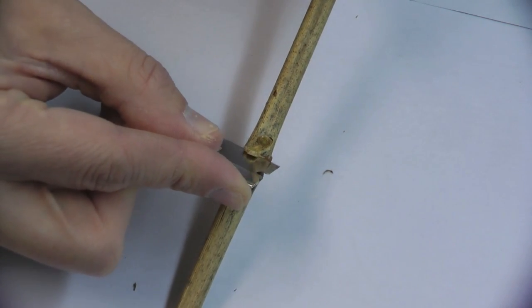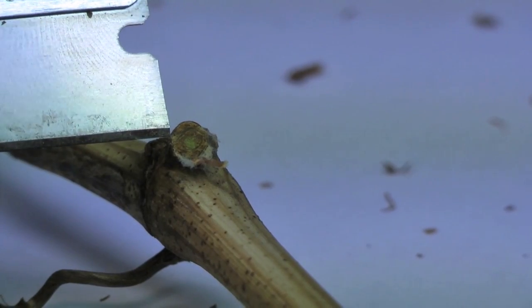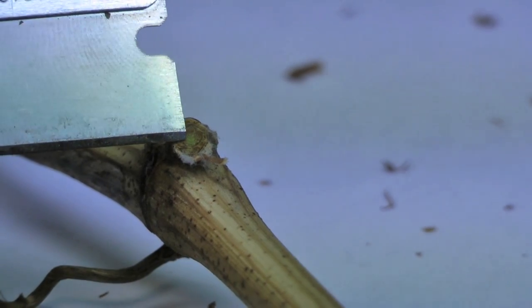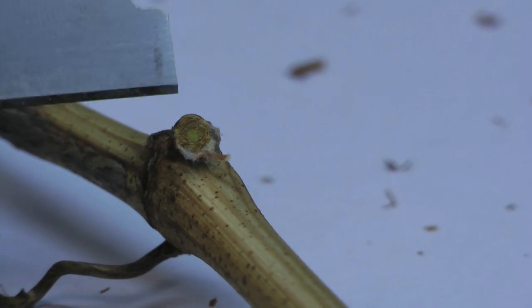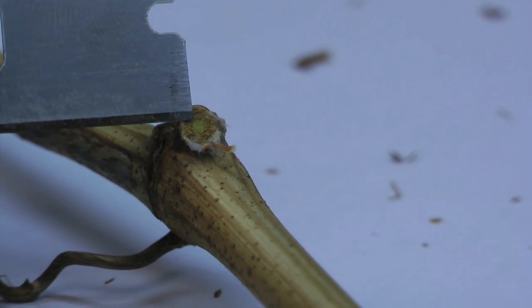We're just making cross sections. So you can see in this bud that we've cut, right here in the middle, this is the primary bud, and it's alive. Nice green color here. So we would count this as one live bud.